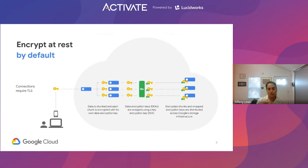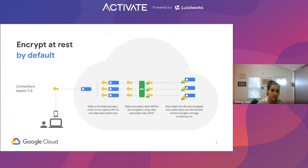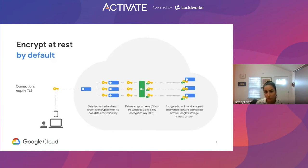Let's walk through an example. Let's say that I am uploading a montage of Basset Hound videos — love Basset Hounds, by the way. We have our Basset Hound montage that has been uploaded to the cloud. Once it's uploaded, the Basset Hound montage is broken up — let's say into hundreds of chunks. Each chunk is wrapped in its own DEK. The DEK is then wrapped in a KEK from the service being provided on GCP, and that's then distributed across Google's global infrastructure.